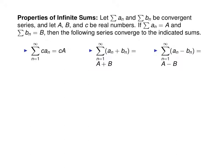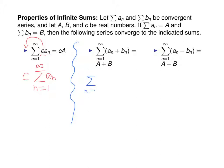Next we have some properties of infinite sums. If we have a convergent series, and a, b, and c are real numbers, and the sum of the a sub n's equals capital A and the sum of the b sub n's equals capital B, then the following series converge to the indicated sums. If you multiply the a sub n's by a constant, that constant can factor out in front of the sum. And if you add together the terms of two convergent series, you can find each sum separately and add the results; the same is true for subtraction.